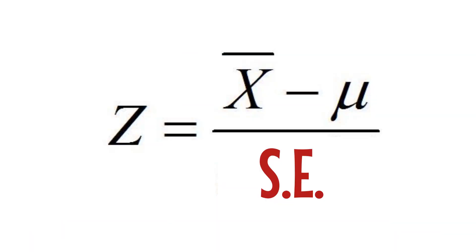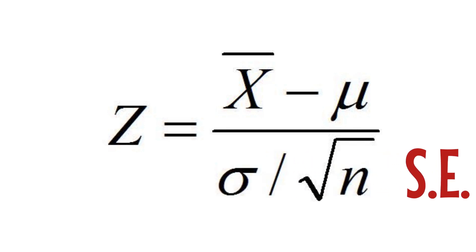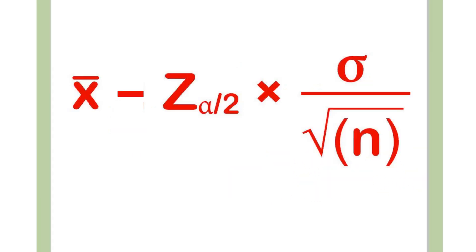Let's start with our z-score formula and call our sample mean x-bar. So z equals x-bar minus mu, which is the population mean we don't know, divided by the standard error — recall that standard error equals the standard deviation divided by the square root of n. Rearranging the equation gives us: mu equals x-bar minus z times the standard error, which becomes the lower bound of the confidence interval, and x-bar plus z times the standard error becomes the upper bound.